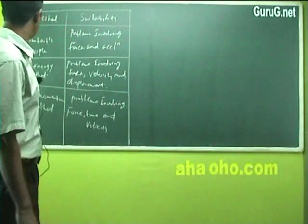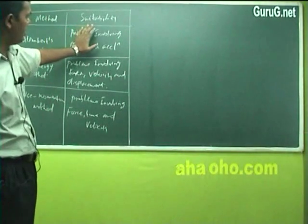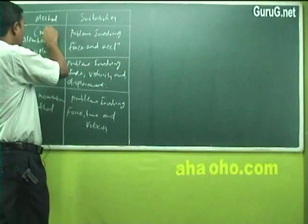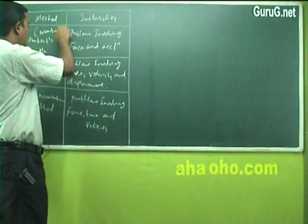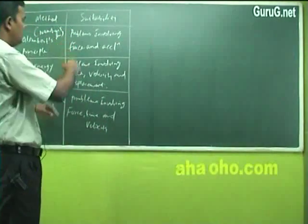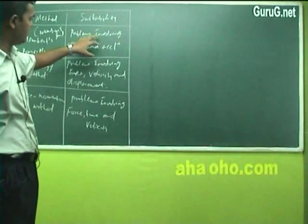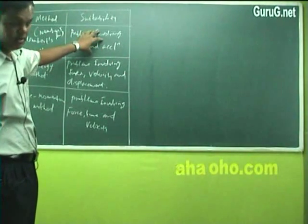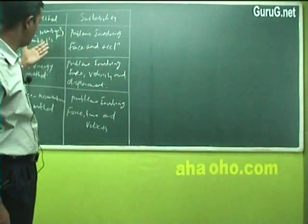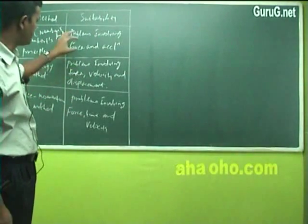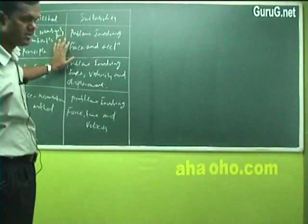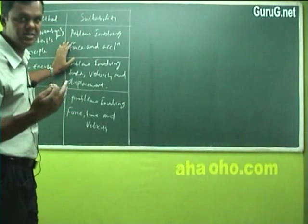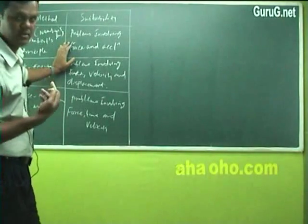I made a table or column to differentiate what is a method and how far it is suitable to solve a question. The purpose of writing this tableau column is, when you read a question you should come to a conclusion that this particular method is the easiest way of solving the particular problem. That is the use of this tableau column.